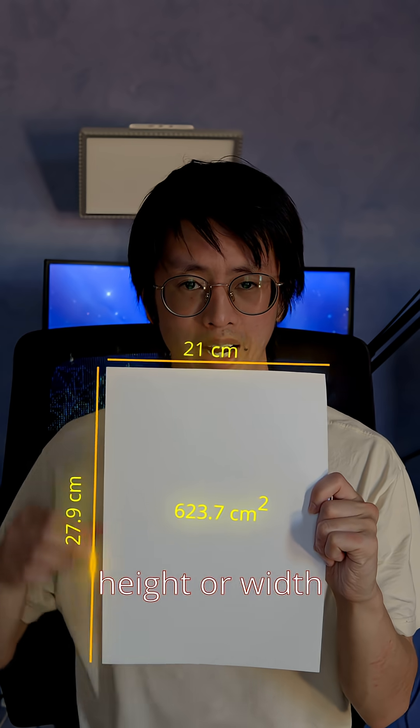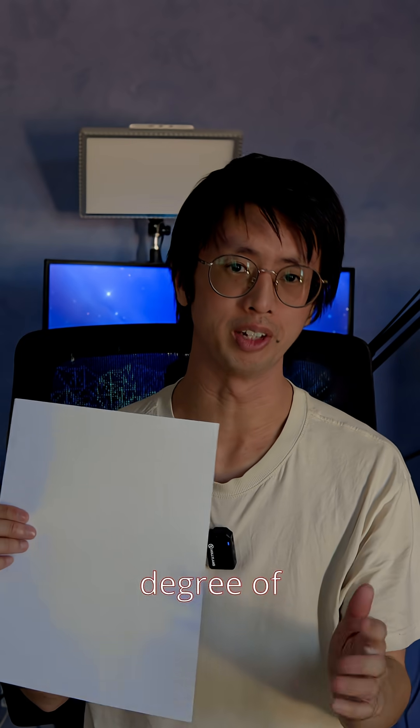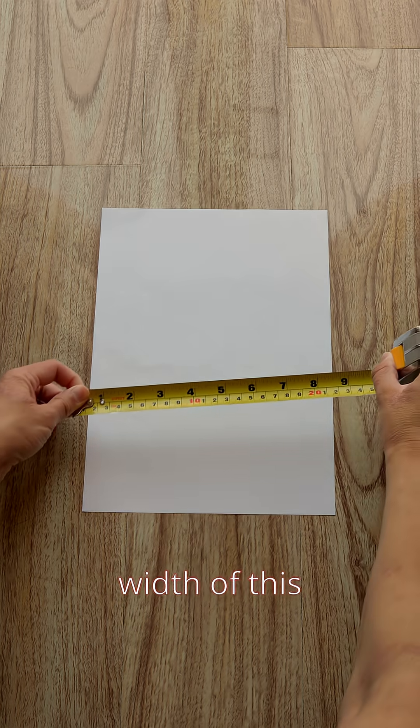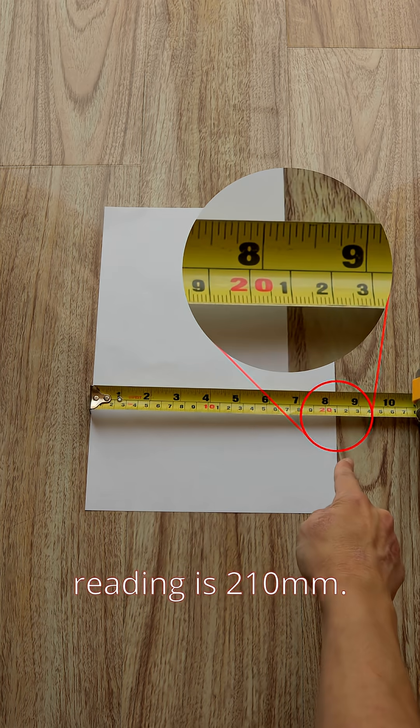Anything that you measure, whether it be height or width or even area, will have some degree of uncertainty. If I measure the width of this paper with this measuring tape, the closest reading is 210mm.